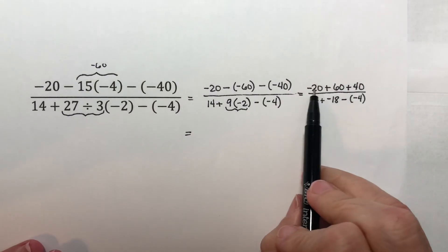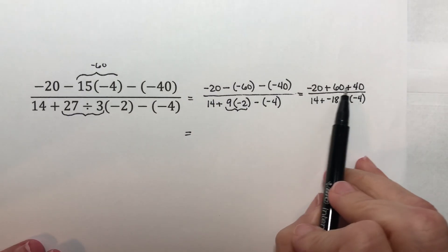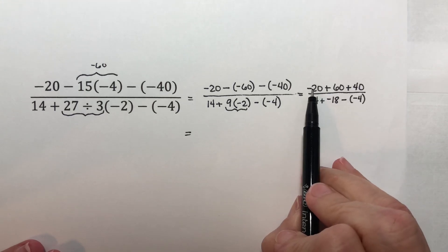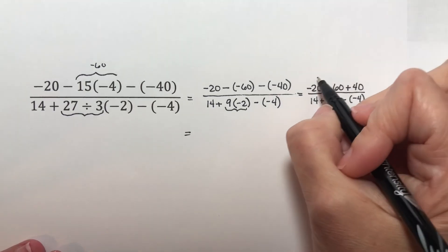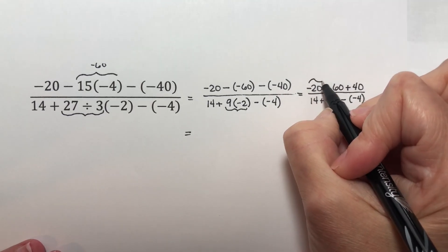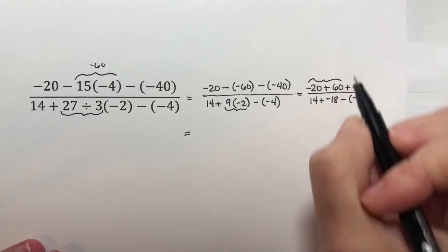So let's start combining across the top. All we have left are additions, so you can just pick two of them and add them.